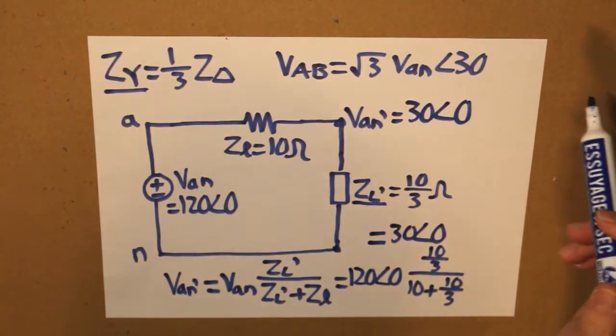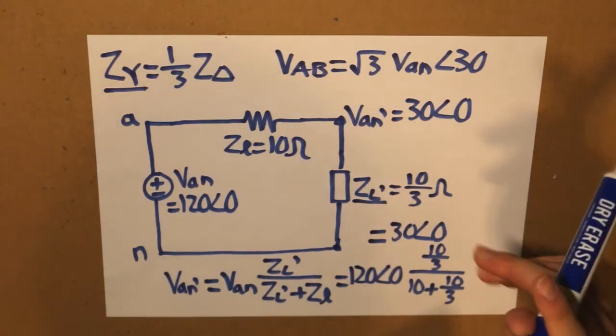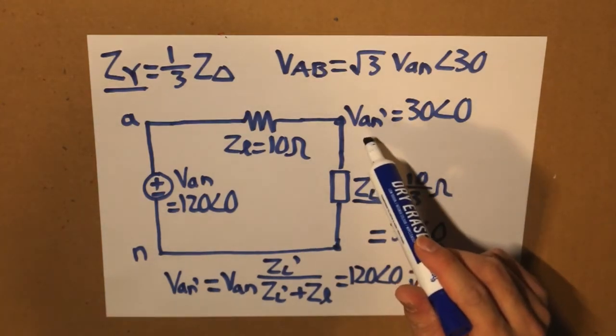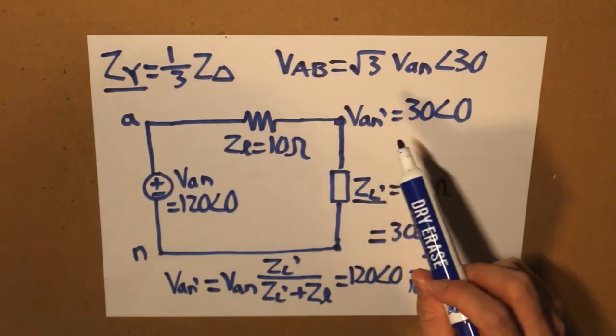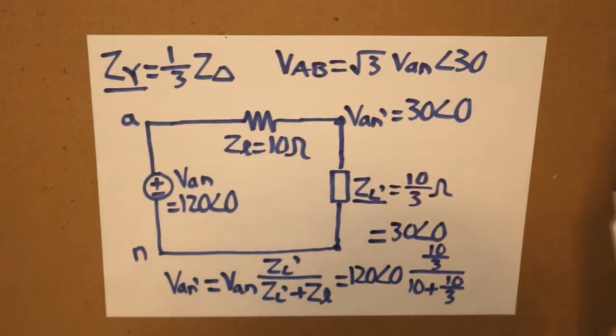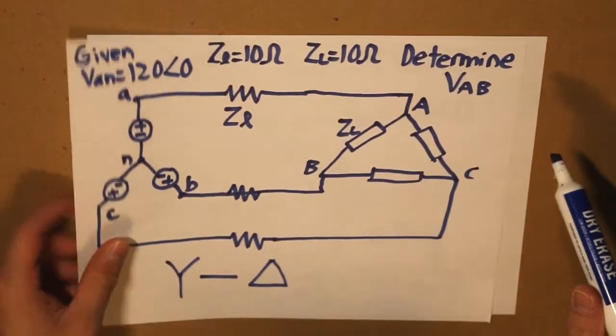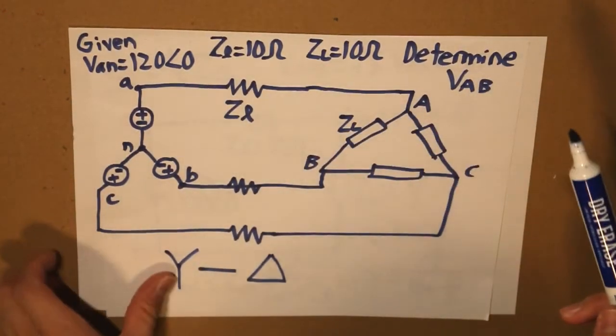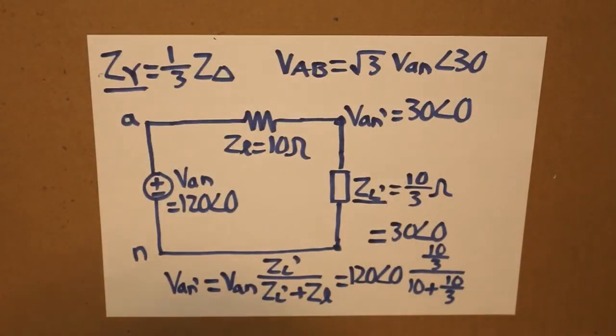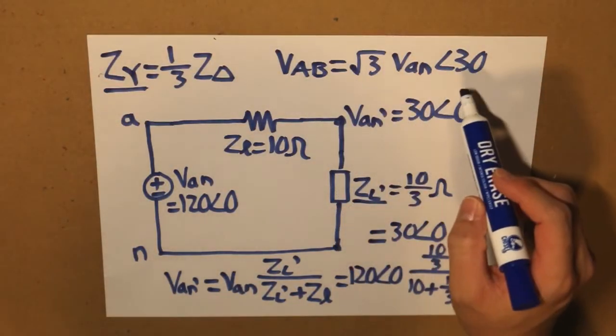So now that I found this value, you might be wondering why did I find it? Well what we do know is that this voltage is actually our Y equivalent conversion of our delta voltage, the delta voltage that we're trying to find overall in this question. So how do we do that? Well, we take this equation.